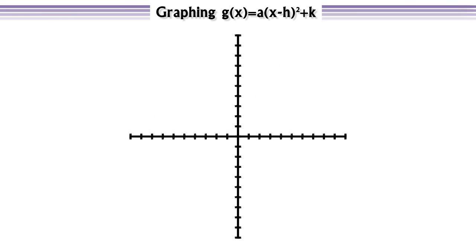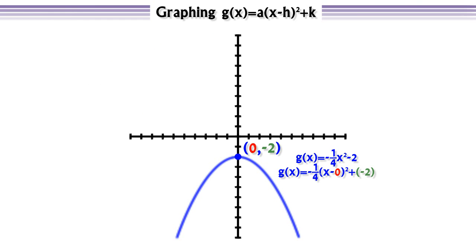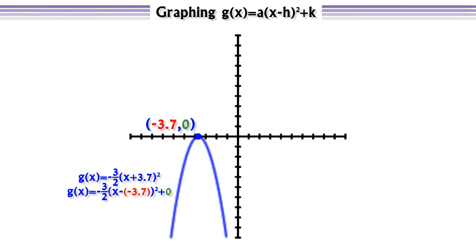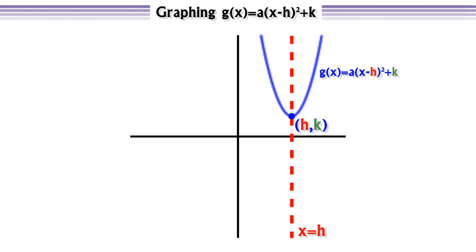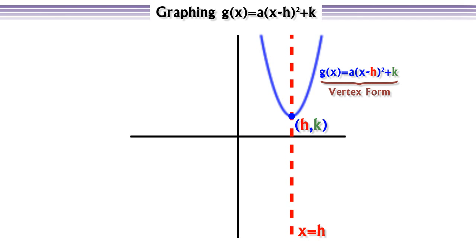So in general, when we graph functions of the form g(x) = a(x - h)² + k, we're just graphing f(x) = ax² and shifting it left or right h units, depending on whether h is positive or negative, and up or down k units, depending on whether k is positive or negative. The vertex will be the point (h, k), and since shifting a parabola up or down doesn't affect the axis of symmetry, the axis of symmetry will be x = h. This, ladies and gentlemen, g(x) = a(x - h)² + k is what we call the vertex form of a quadratic function.